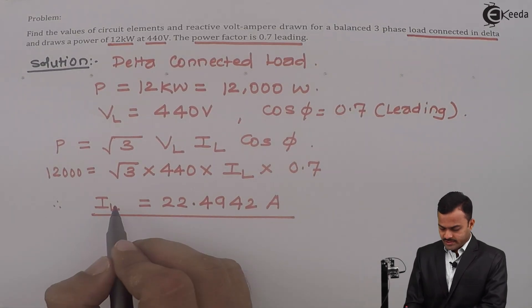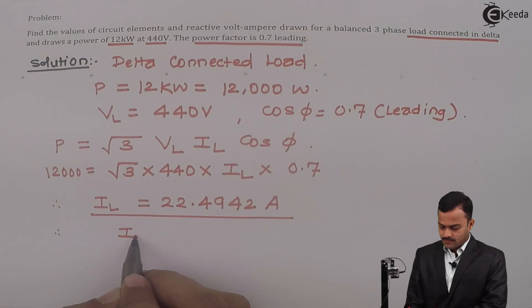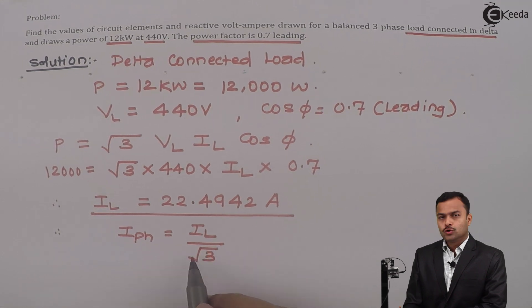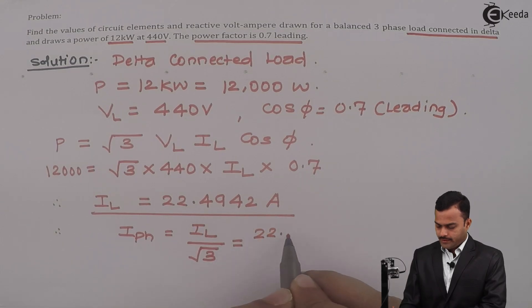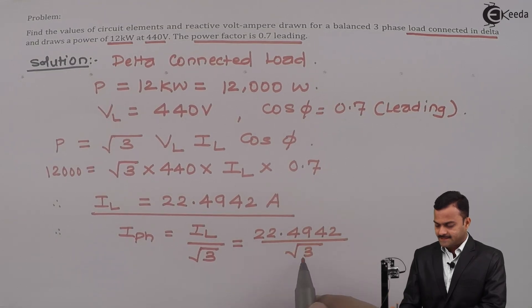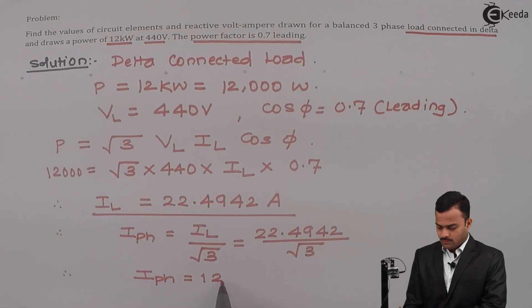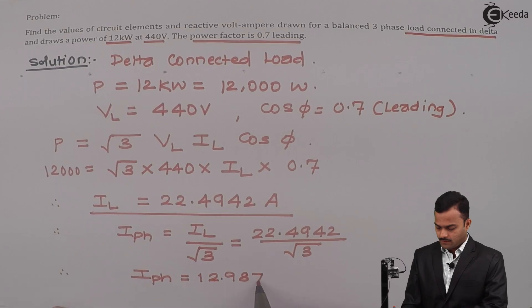Now, it's a delta connected load, so for a delta connection load, phase current is line current divided by root 3, equal to 22.4942 divided by root 3. If we solve, you will get phase current IPh equal to 12.987 amperes.